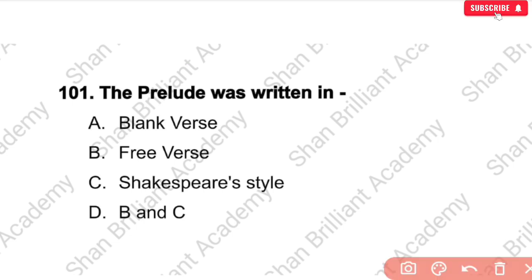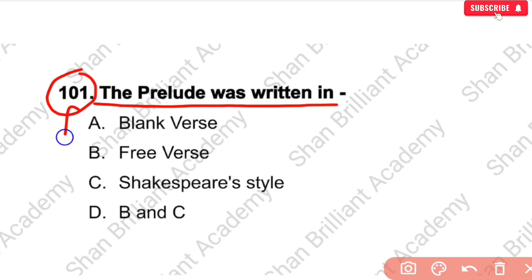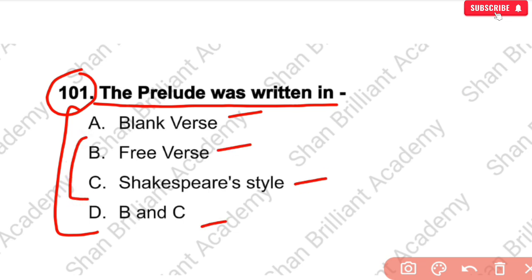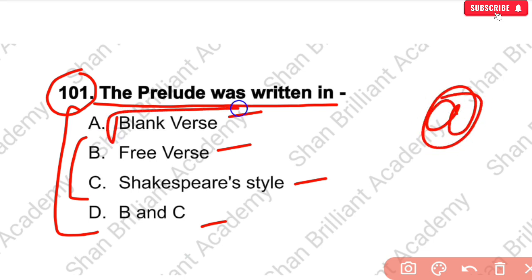MCQ No. 101: The Prelude was written in — blank verse, free verse, or expressive style? The correct answer is option number A — blank verse. Let me tell you about the Prelude: it was published in 1850 by his wife Mary Hutchinson, three months after William Wordsworth's death.